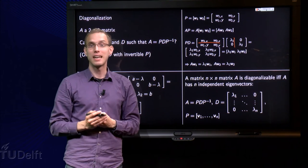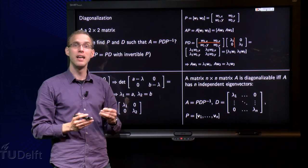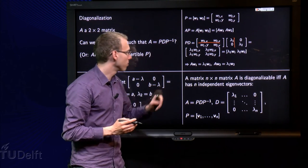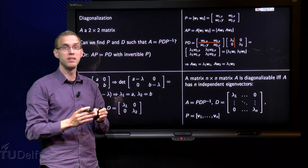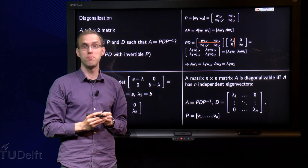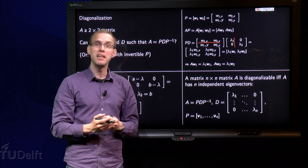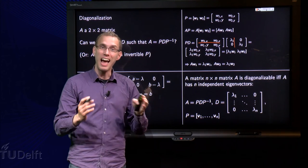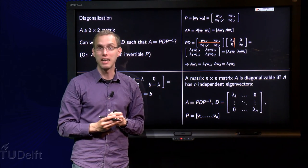So when can we do this trick? Well, the square matrix P is invertible if and only if we have enough columns of P. P has to be invertible, which means that what is needed is independent eigenvectors.